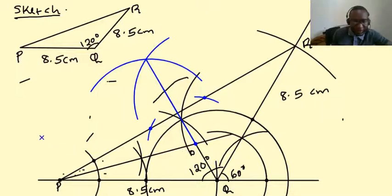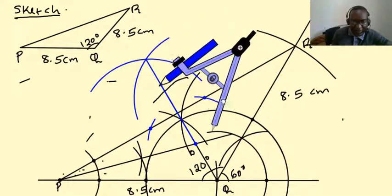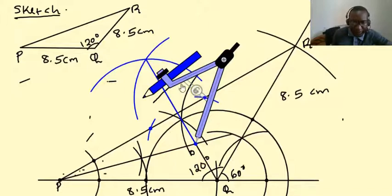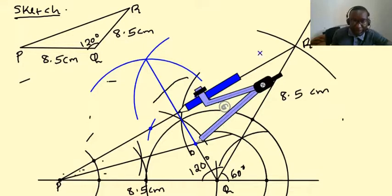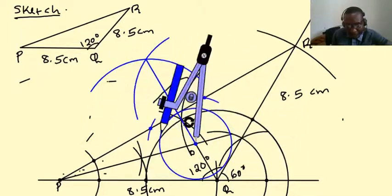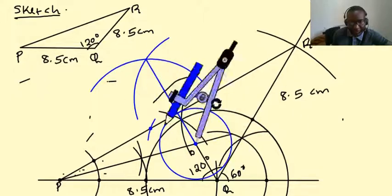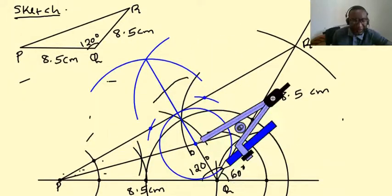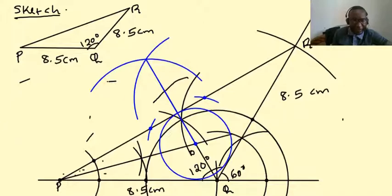Now the radius of our circle is that distance from the center up to where this perpendicular bisector meets that line PR. So we stretch our compass like that and you're going to draw a circle. Remember it has to touch all the sides of the triangle internally. So having settled it like that, we draw our circle there. It has to touch all the three sides of the triangle internally. That is our circle.